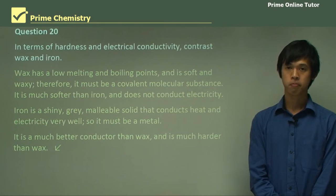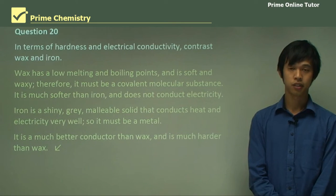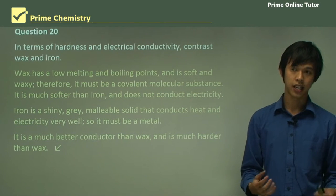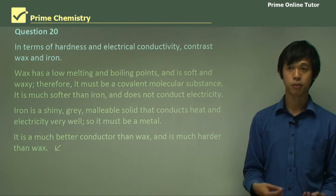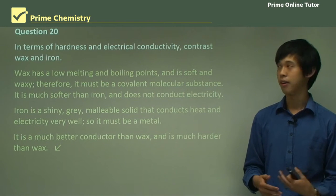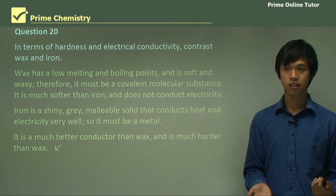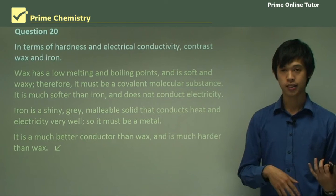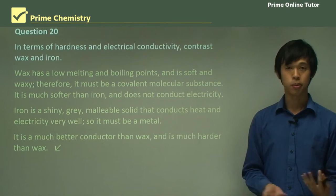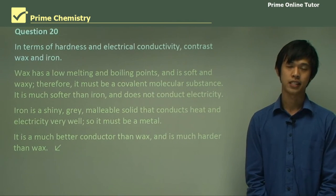So that concludes today's lesson on electrical conductivity and hardness. We looked at how hardness and electrical conductivity can be used to identify the different bonding types, and how we can explain these properties based on our bonding types. This concludes our series on bonding and classification — I look forward to seeing you at our next lesson.